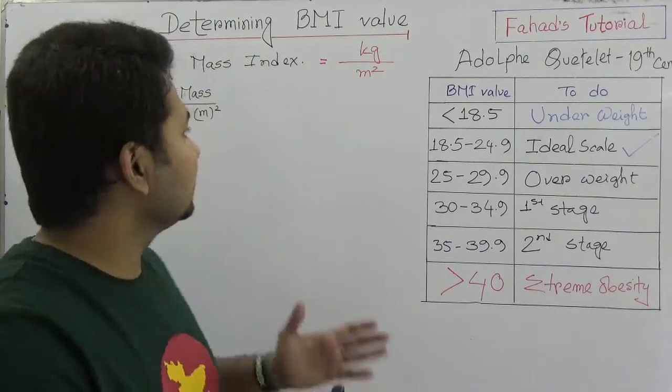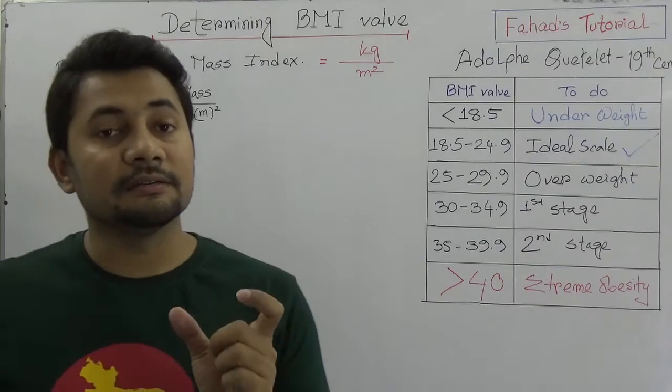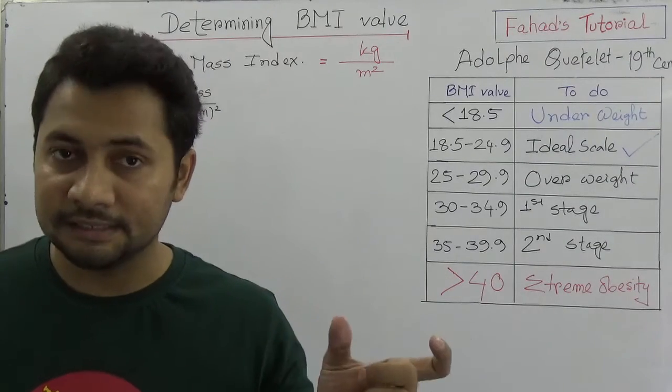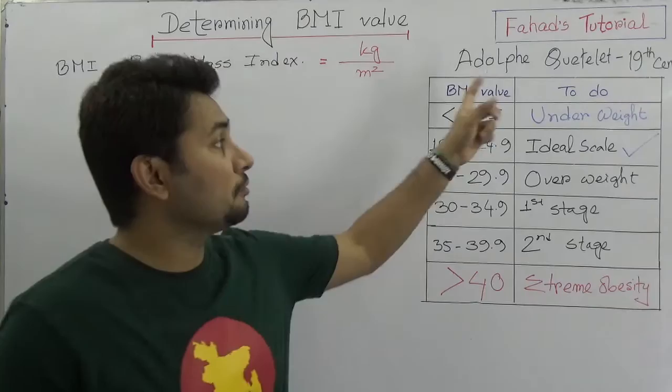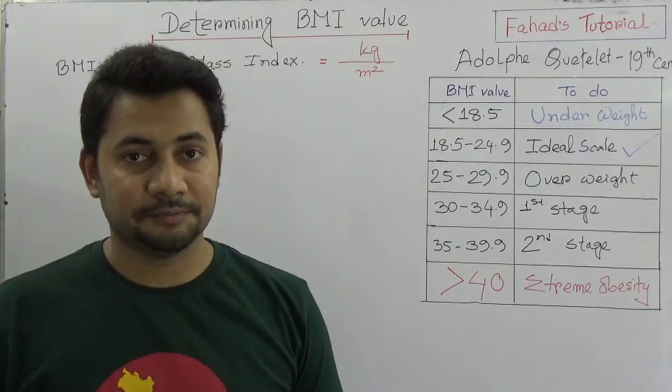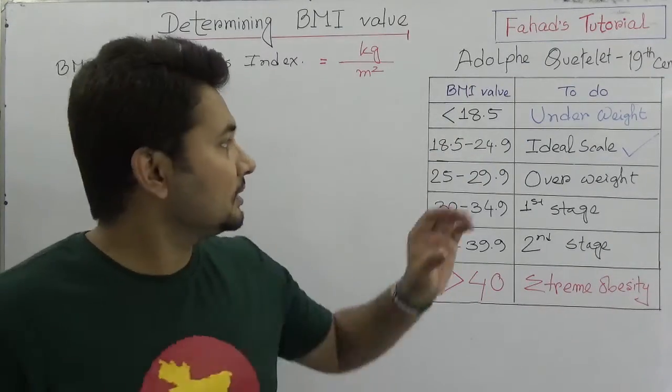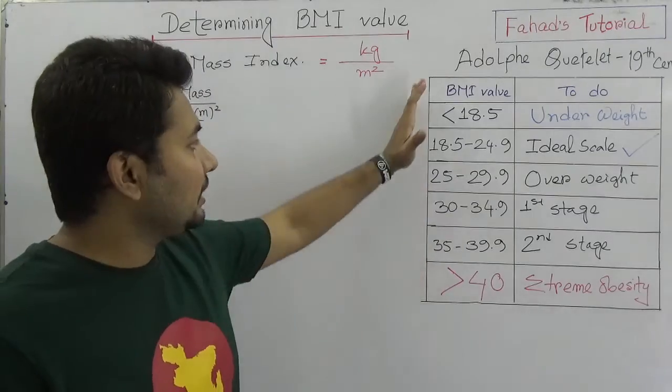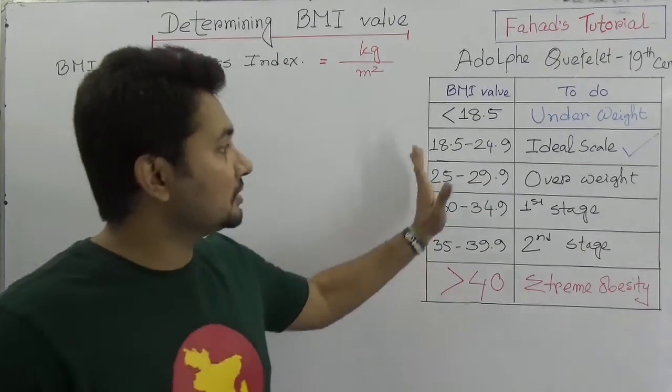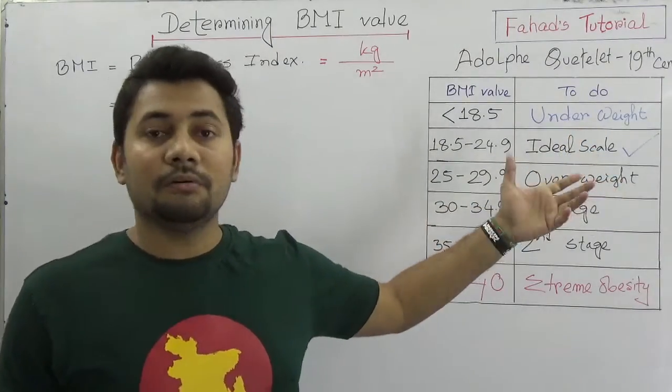So we can see that BMI is simply said that body mass index, which is developed by Adolf Quetelet in 19th century. So there are some categories that which categories we can measure a person: either underweight or the person is healthy or the person is overweight.